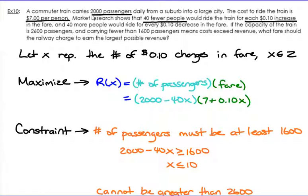Now the next sentence sets this question apart. If the capacity of the train is 2,600 passengers, so that is the maximum number of people who can ride the train safely, carrying fewer than 1,600 passengers means that costs exceed the revenue. So you can't have less than 1,600 passengers because you're going to make negative revenue and lose money. What fare should the railway charge to earn the largest possible revenue?